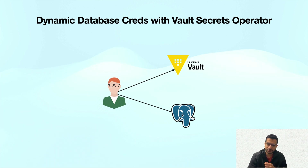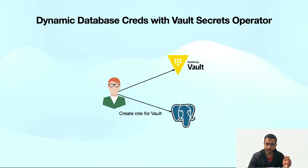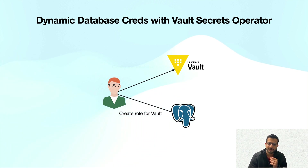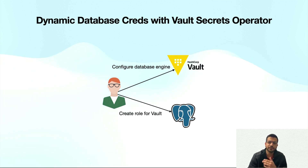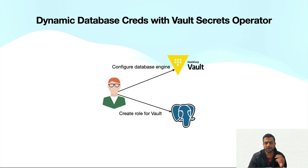In our demo we are going to use Postgres as our database. First we are going to create a super user role for the Vault server in Postgres. This role will allow Vault to connect to Postgres and create credentials for our application. In your organization you may want to work with a DBA team to create this role. Next we'll need to configure the database secrets engine inside Vault, which includes enabling the engine, configuring the connection between Vault and Postgres, and creating a new role for your application.